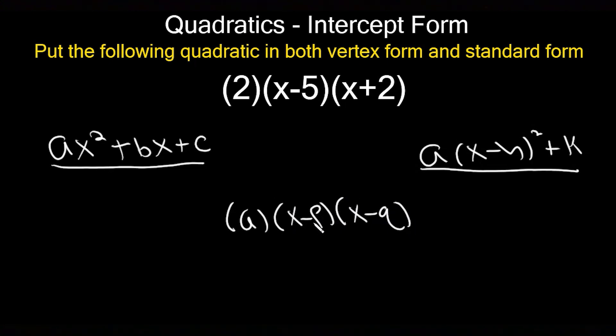x - p and x - q are your factors of your zeros. For example, right here and right here. That a value is going to be the same across all three forms.